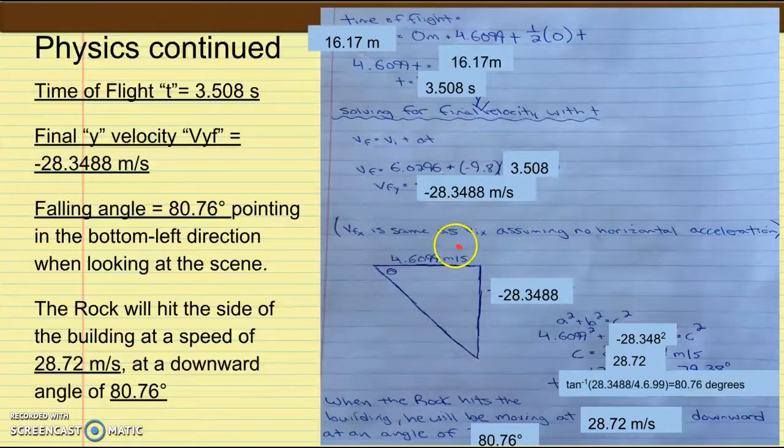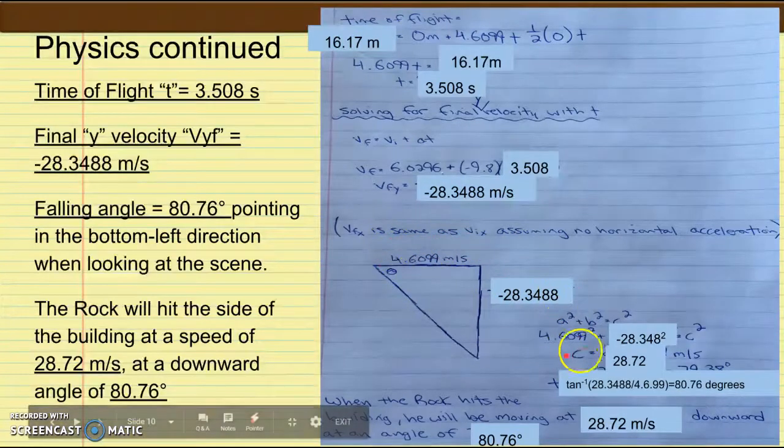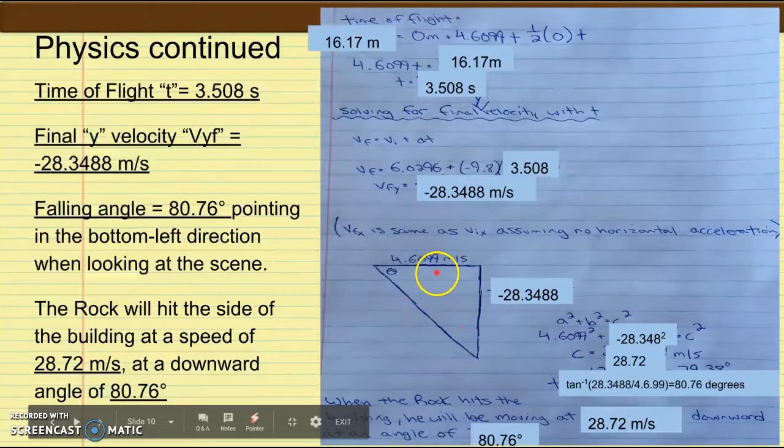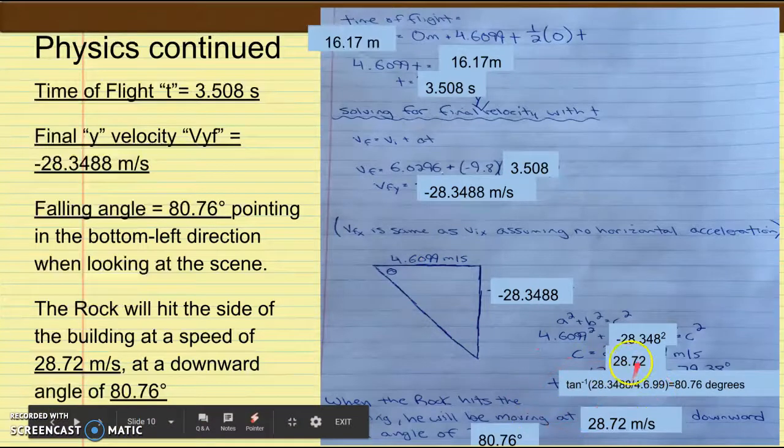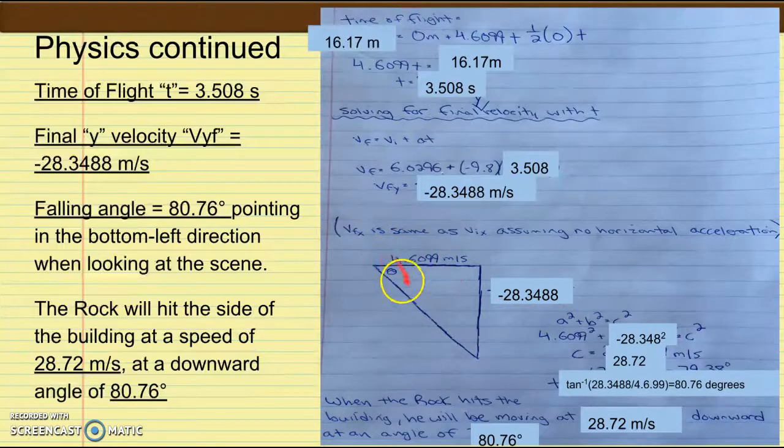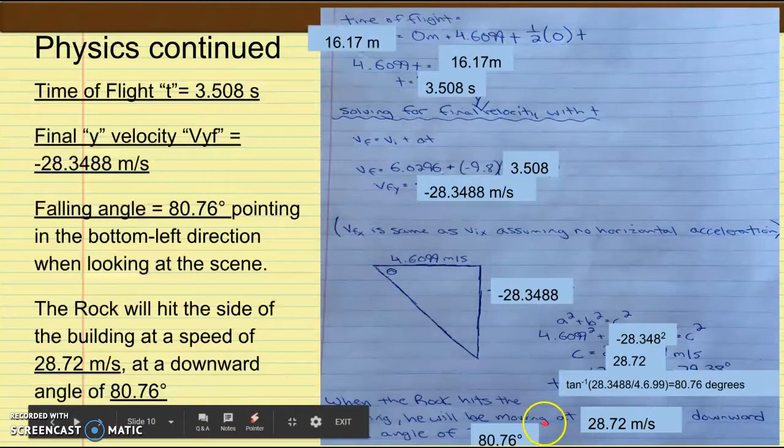After doing this, we can set these final velocity values to a triangle and use the Pythagorean theorem to solve for the hypotenuse, which will give us our total overall final velocity, which we found to be 28.72 meters per second. And taking the inverse tangent of our y-value and x-value for the angle, the final angle at which he's going to hit the skyscraper is 80.76 degrees downwards to the left.